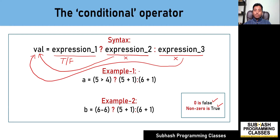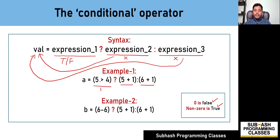Let me explain this with an example. I have two examples: example one and example two. In the syntax, before the question mark you must have expression one, and on either side of the colon you must have expression two and expression three. Here the expression before the question mark is a relational expression. Five greater than four results in a true value because five is greater than four, so the result is one, which is non-zero — a true condition. Therefore, expression two gets evaluated and its result gets stored into variable a. So the value of a is six.